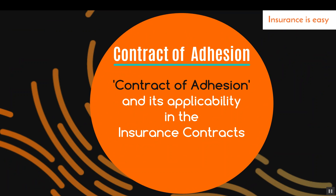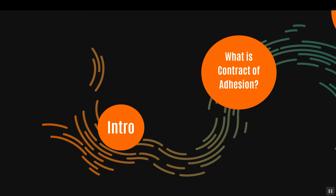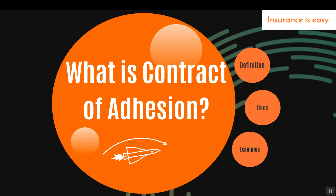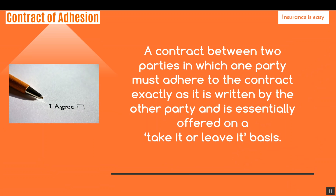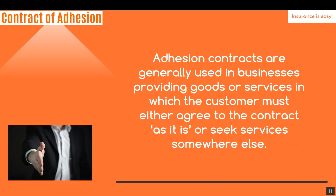In this video we are going to discuss the term contract of adhesion and its applicability in insurance contracts. A contract of adhesion is a contract between two parties in which one party must adhere to the contract exactly as it is written by the other party, and is essentially offered on a take it or leave it basis. Adhesion contracts are generally used in businesses providing goods or services in which the customer must either agree to the contract as it is or seek services somewhere else.